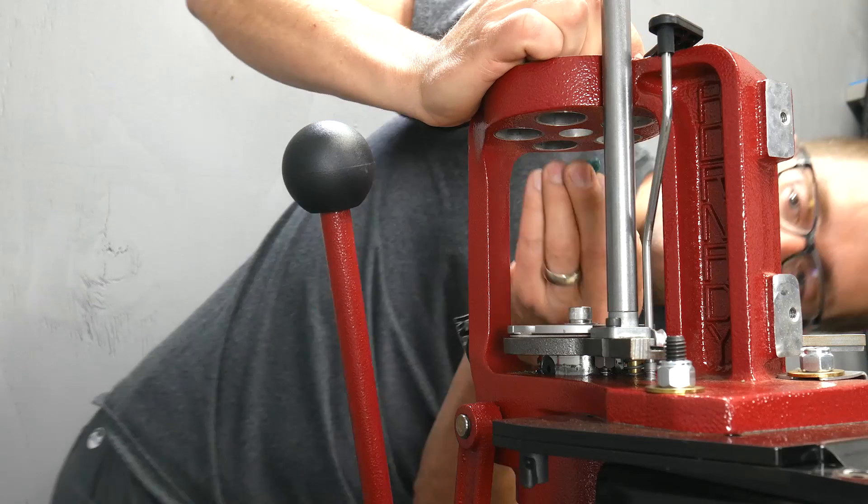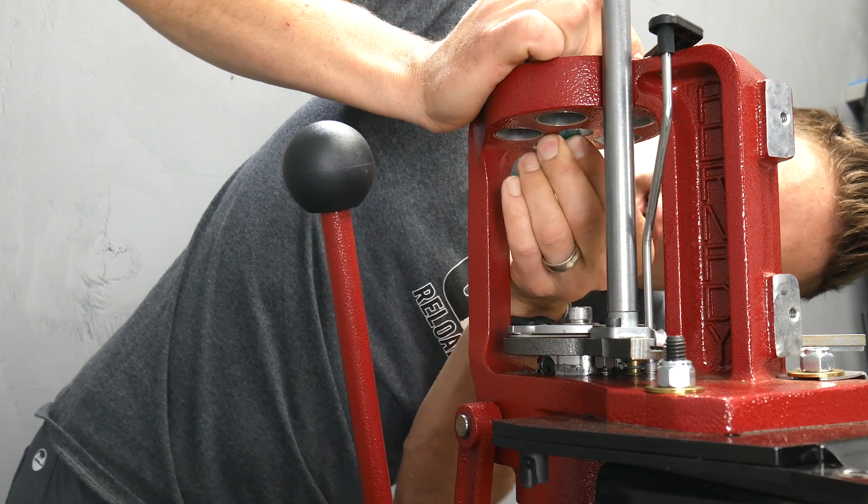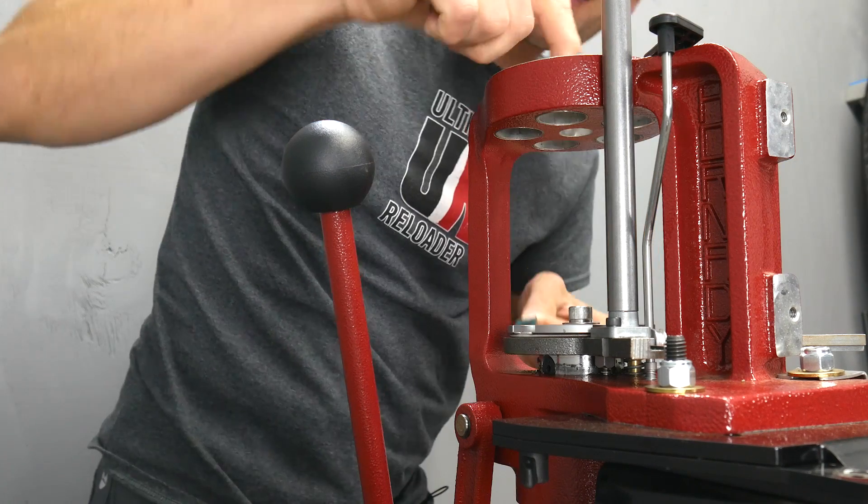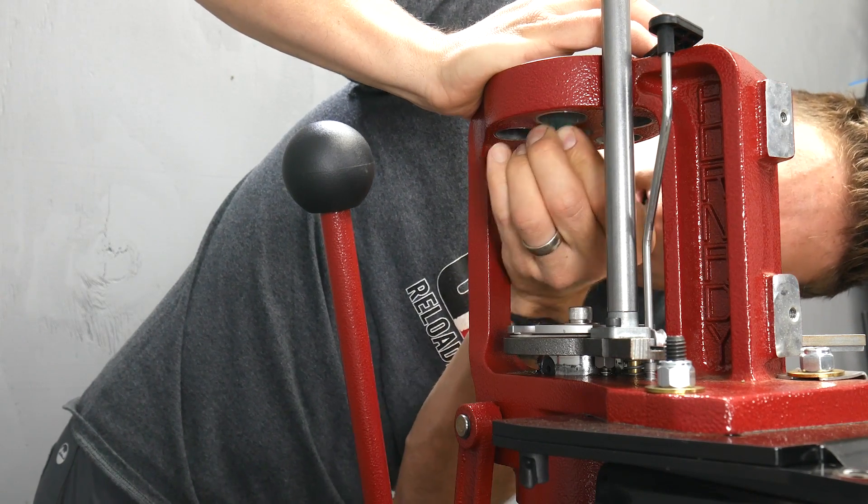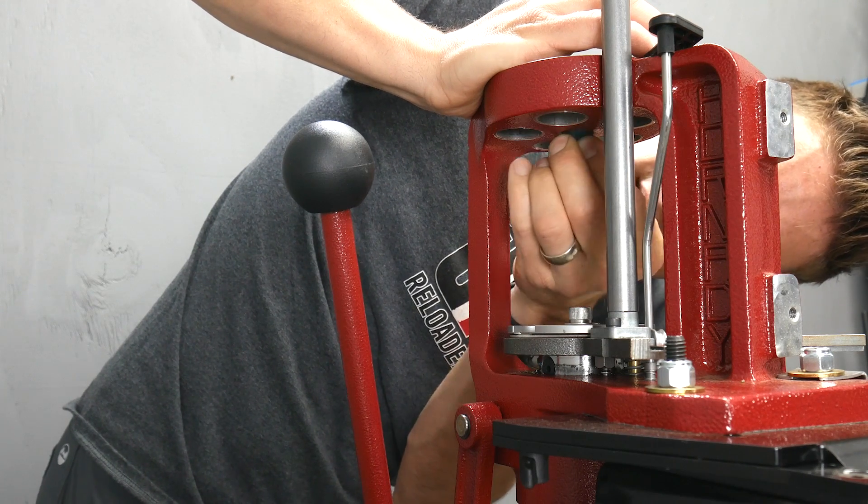So we're just going to start by roughing up the surface around the circumference of the center hole in the top of the press frame. This is where the circular portion of the light strip is going to stick.